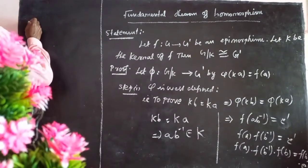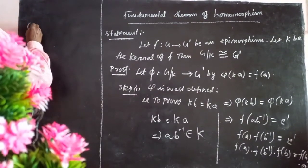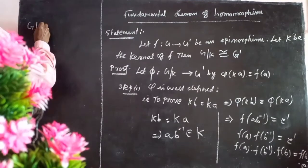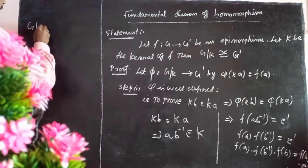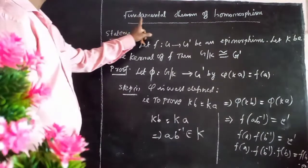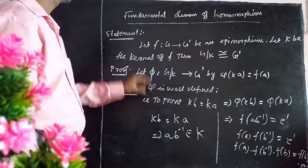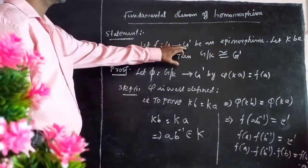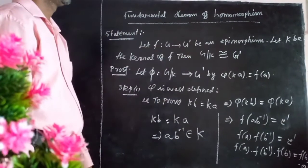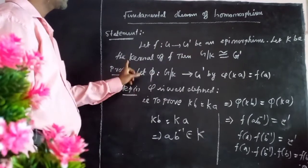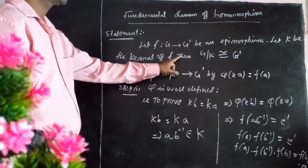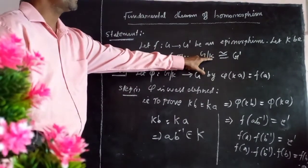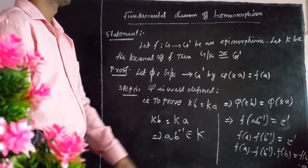The quotient group is G by K. The fundamental thing about homomorphism is that F: G → G' is an epimorphism, and K is the kernel of F. Then G by K is isomorphic to G'.